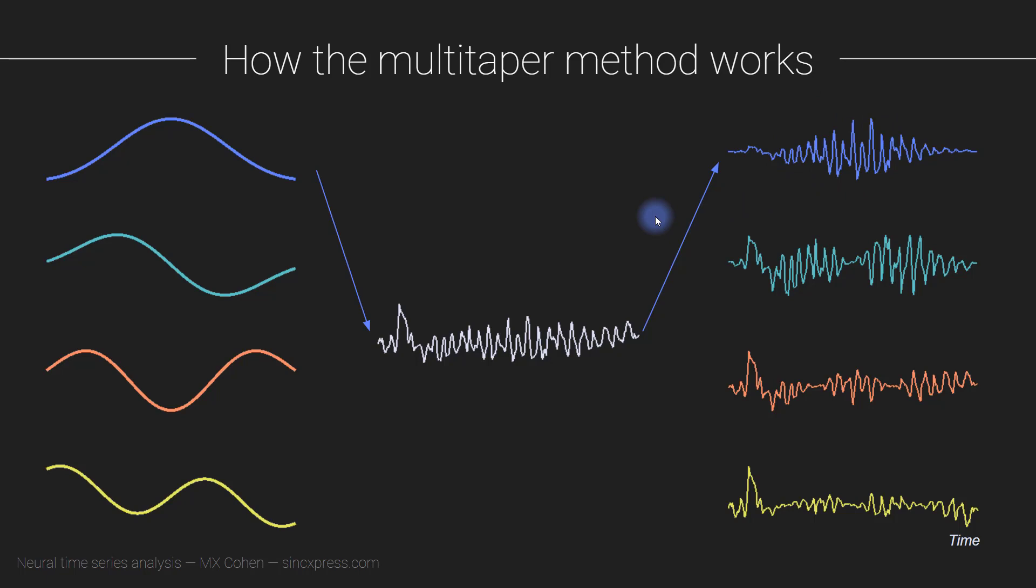And then you can see where this is going, we move to the next taper. And that gives us a time series that looks like this, the next one and the next one. So from this one data snippet, we have obtained four different time series.